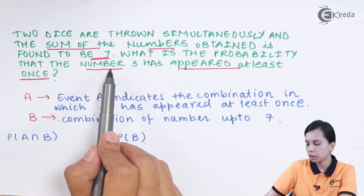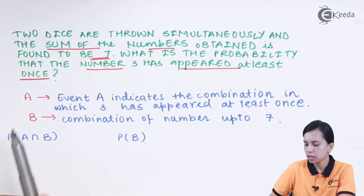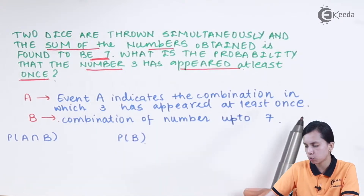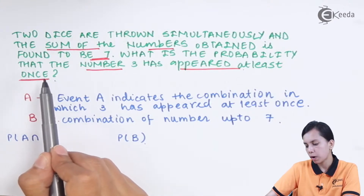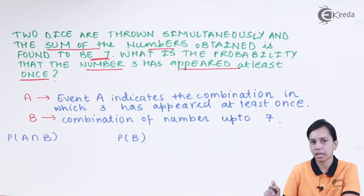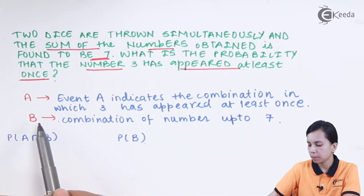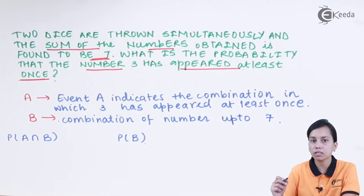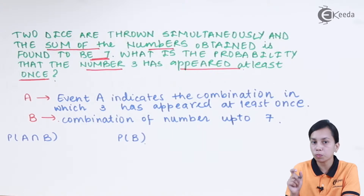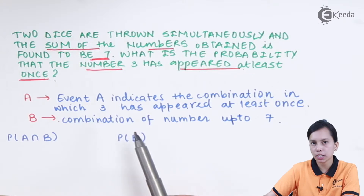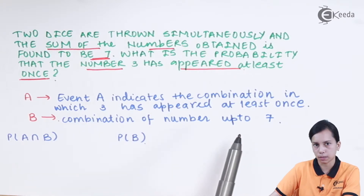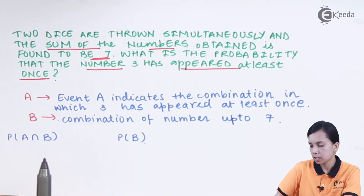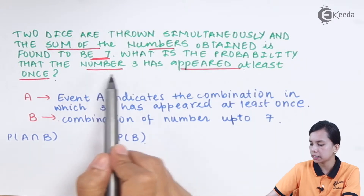Now let me define the events using symbols. Event A is defined as the combination in which three has appeared at least once — at least once means three can occur one time or more than one time. Event B is the combination of numbers that sum to seven, meaning on the two dice the combination is such that the sum of the two numbers is seven.